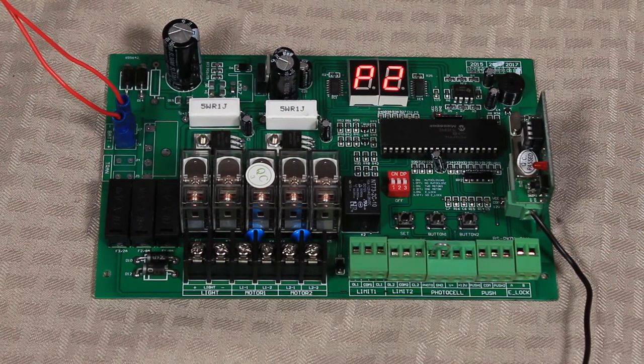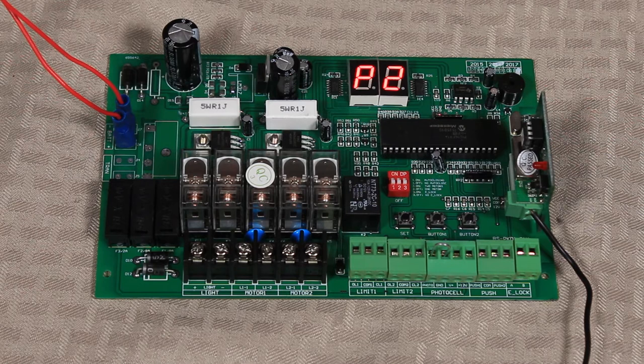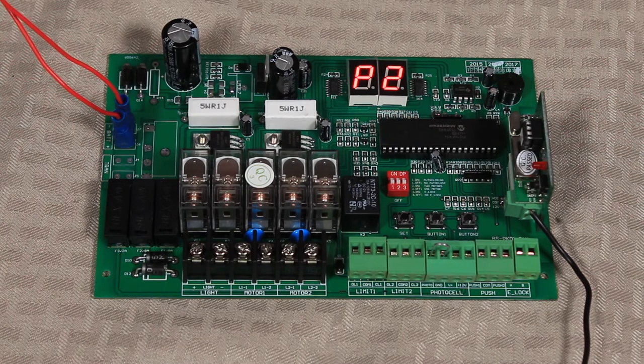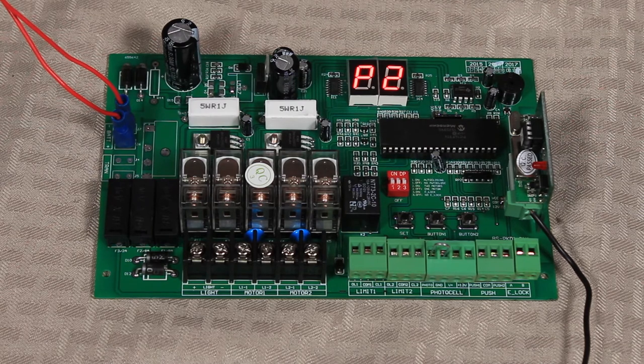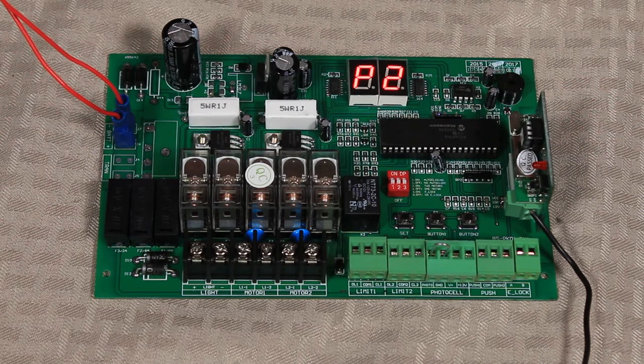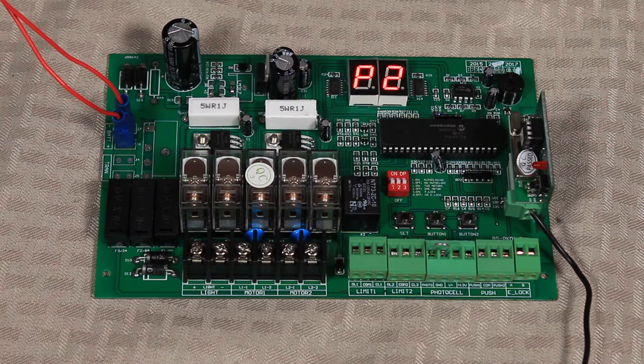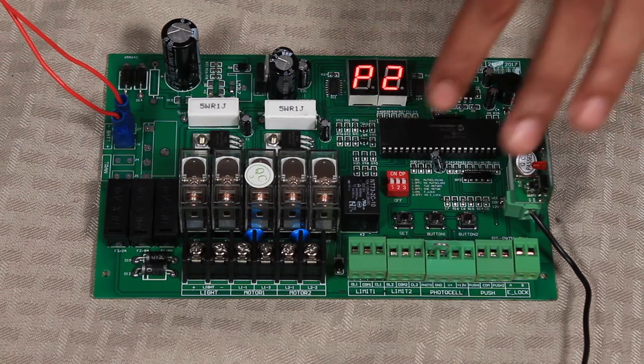P2 is the slowdown time for the gate operator. What that means is if we set our total runtime at 20 seconds and we set P2 to 10 seconds, once the timer hits 10 seconds, the voltage going to the motor is going to be lowered in order to slow it down. That's pretty much all that function does.